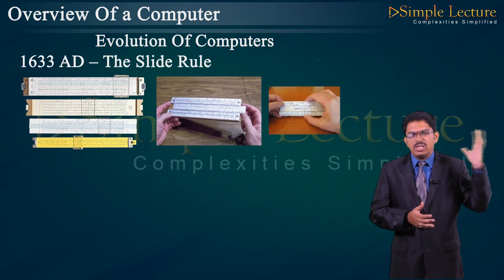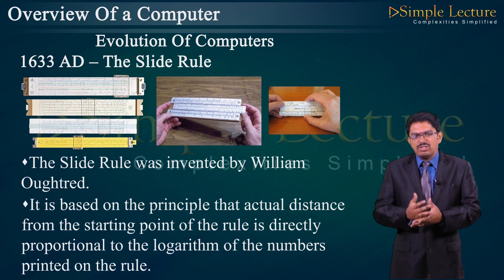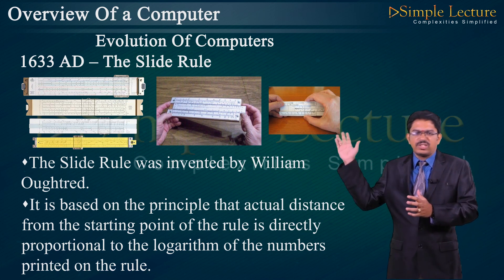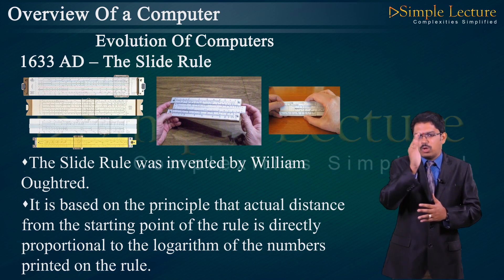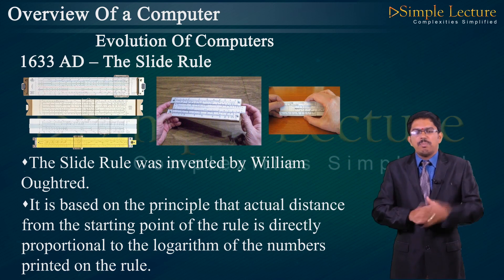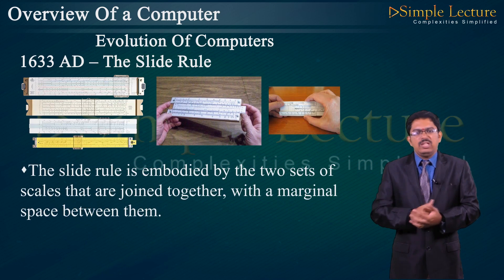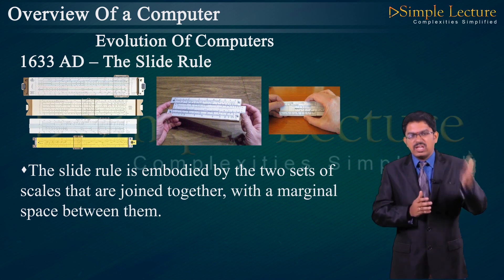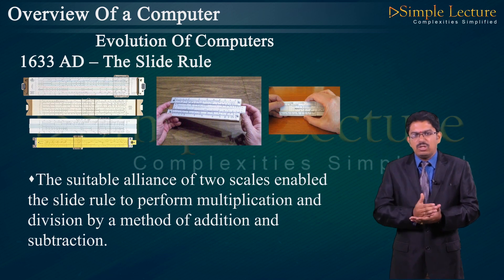The Slide Rule was invented in 1633 AD by William Oughtred. It is based on the principle that the actual distance from the starting point of the rule is directly proportional to the logarithm of the numbers printed on the rule. Numbers are placed from 1 to 9, and the slide moves horizontally and vertically according to the numbers. The slide rule is embedded with two sets of scales joined together with a marginal space between them.